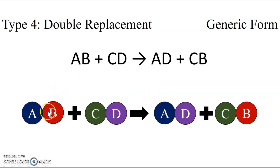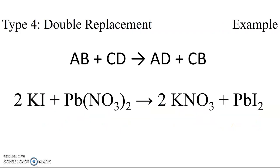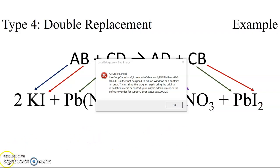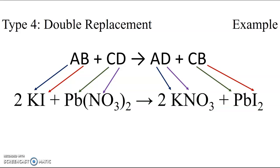An example of this would be the reaction between potassium iodide and lead nitrate to form potassium nitrate and lead iodide. On the reactant side, potassium and iodine form the first compound, and lead and nitrate form the second compound. On the product side, potassium nitrate and lead iodide are formed — potassium and iodine switched partners, and lead and nitrate switched partners. This is an example of a double replacement reaction.